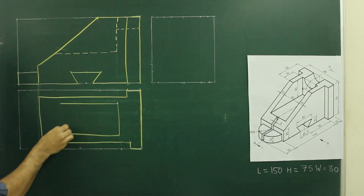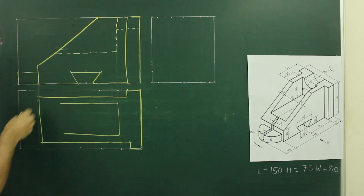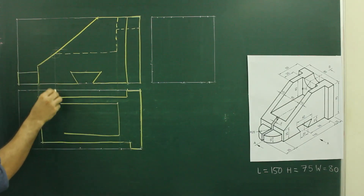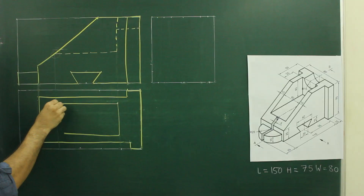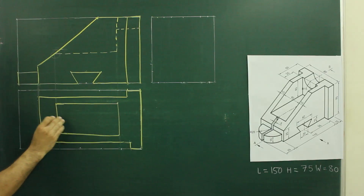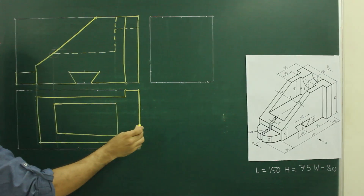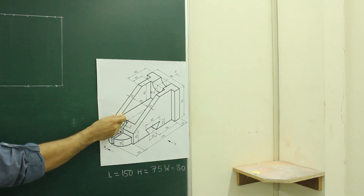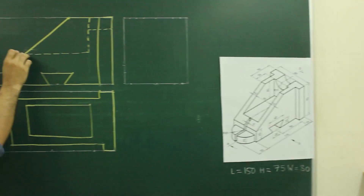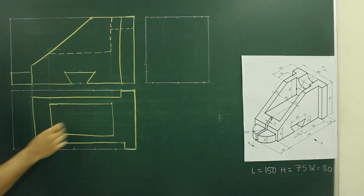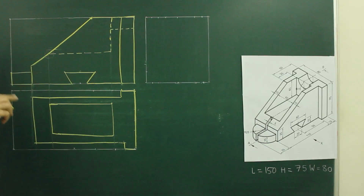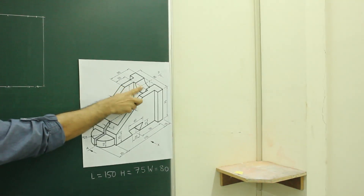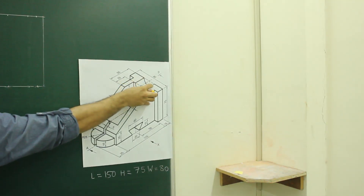We will extend this line but we don't know where to stop, so for that we need to refer to the front view — wherever it will intersect, from there we have to project down so we get the exact length where we need to stop. If you see the main diagram, this length is not mentioned but they have mentioned this, so what we have done is project from there to get that required distance.